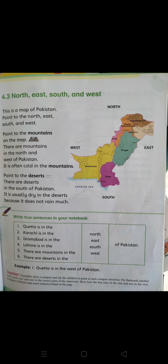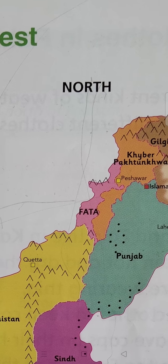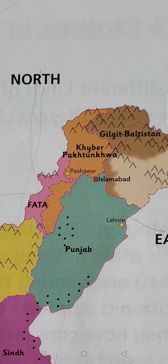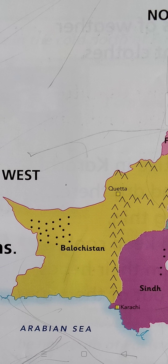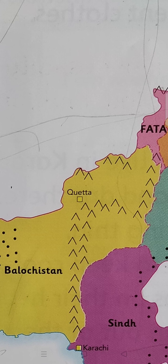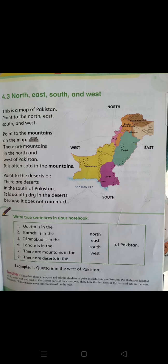In the north there is Gilgit-Baltistan, where you can see mountains, and in the west there is Quetta, where you can also see mountains. There are deserts in the south of Pakistan, in Punjab and Sindh.